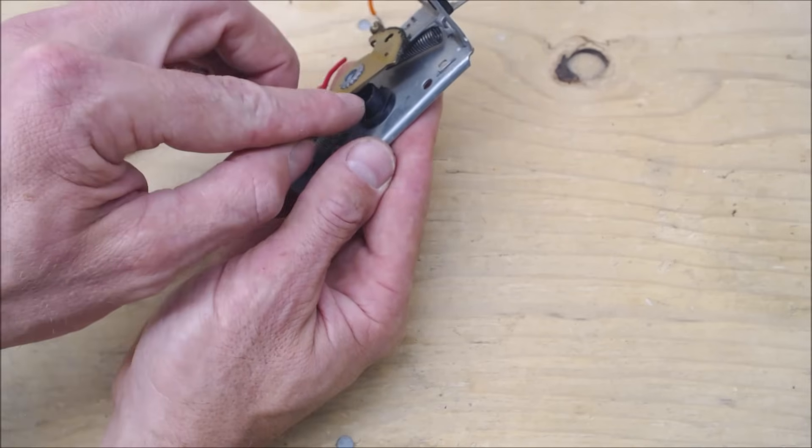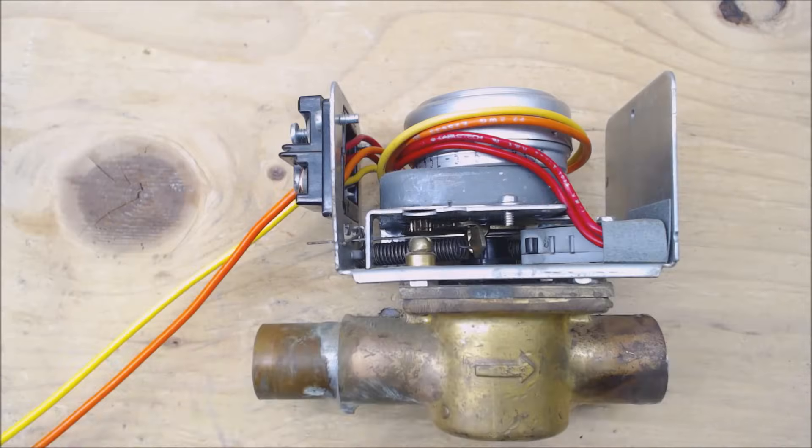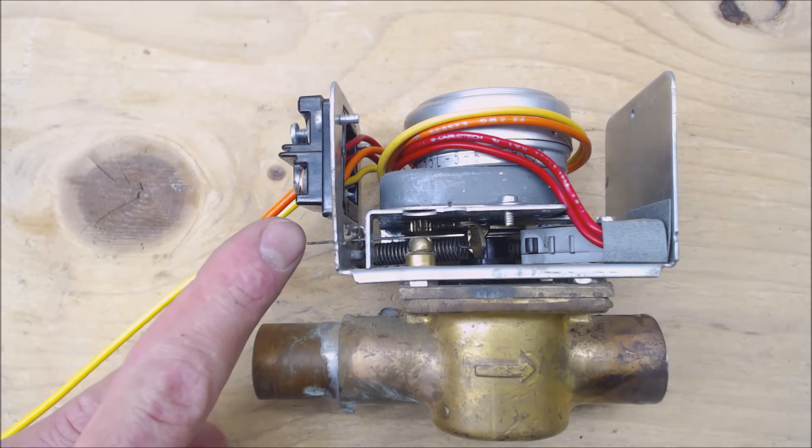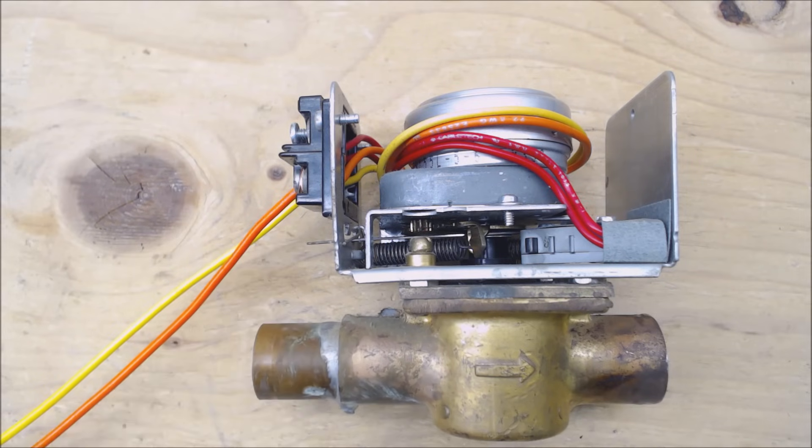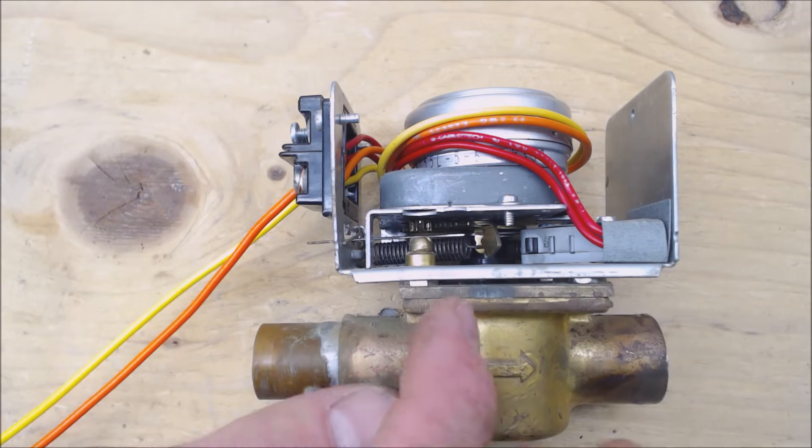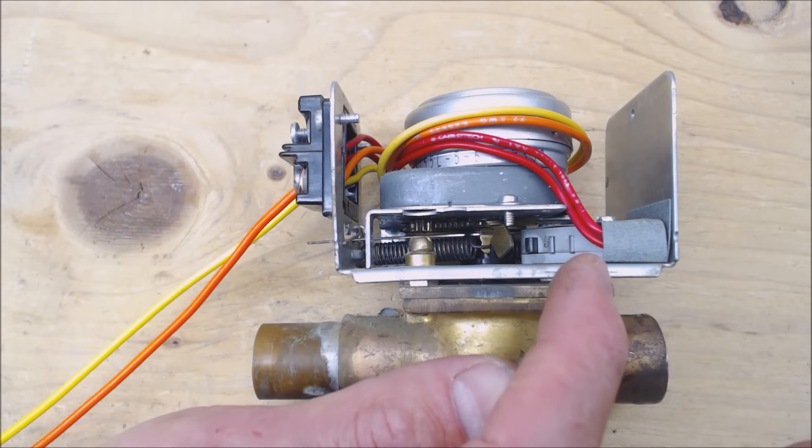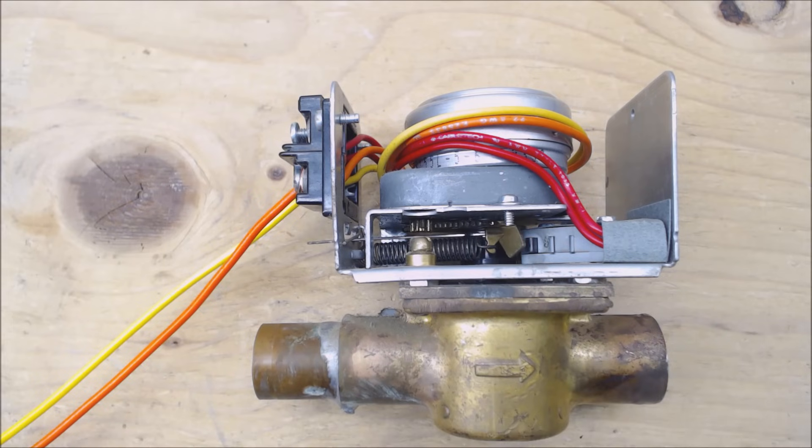So this actually sat right in there. Now we have our 24 volt power wire connected to TH and our common wire connected to TR and let's go ahead and apply power. So you see our motor's turning which makes our gear turn and the tab is going to press up against the micro switch and you're going to hear a clicking noise.